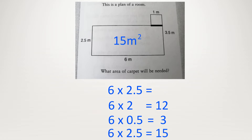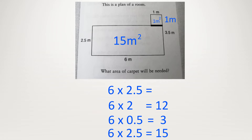The top bit — notice it says three and a half but on the left it says two and a half. Therefore the top bit is just 3.5 minus 2.5 equals 1. In fact the top bit is a square, and the area of this is length times width: 1 times 1 equals 1. We have 15 for the big rectangle and 1 for the small square, so 15 plus 1 equals 16 meters squared.